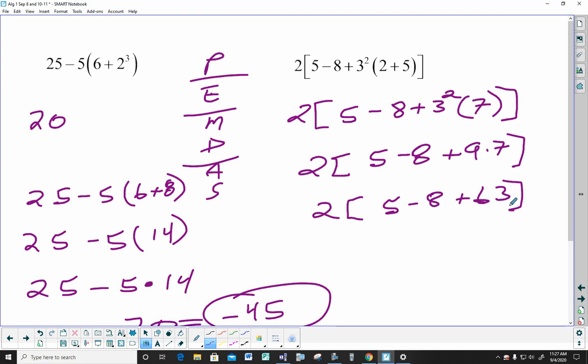Now there's only adding and subtracting going on in here. You do whichever one you come to first as you read left to right. 2 bracket 5 minus 8. That's the first one I come to. So that's negative 3 plus 63. 2. Negative 3 plus 63 is 60. And that's just 2 times 60 is 120.